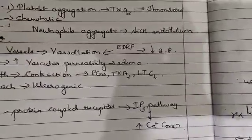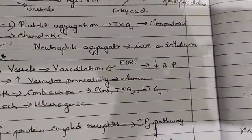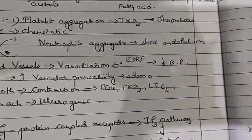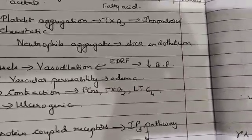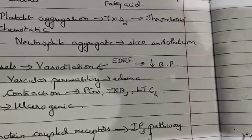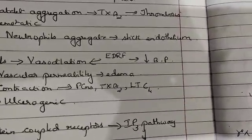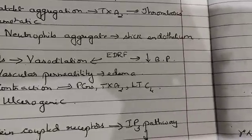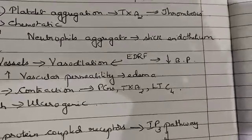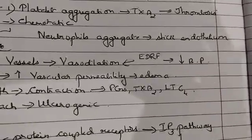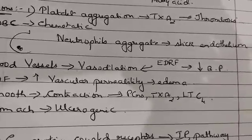Similar to prostaglandins, PAF has both physiological and pathological effects. The pathophysiological effect includes involvement at sites of inflammation — antigen-antibody reactions, asthma, and anaphylactic conditions. The physiological effects include hemostasis, platelet aggregation, labor, and ischemic states of the brain, heart, and GIT. This completes the topic of eicosanoids, which includes prostaglandins, leukotrienes, and platelet activating factor.